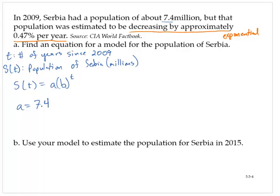Since I have a rate — the population was decreasing by a percentage per year — the base would be 1 minus that rate. The base would be 1 minus... now be careful here, we need to write this as a decimal. It would not be 0.47 because that would be 47%. We would have to move the decimal over two places: 0.0047. And so that would give us 0.9953.